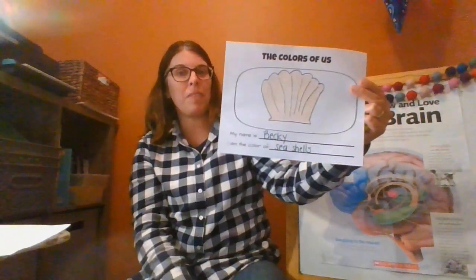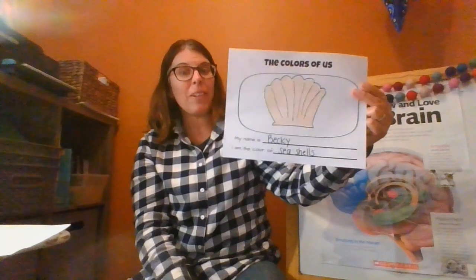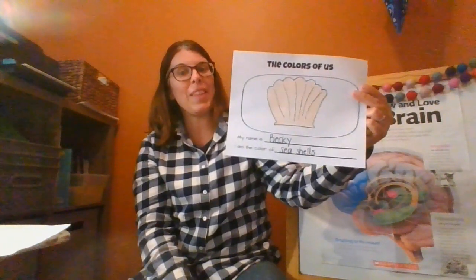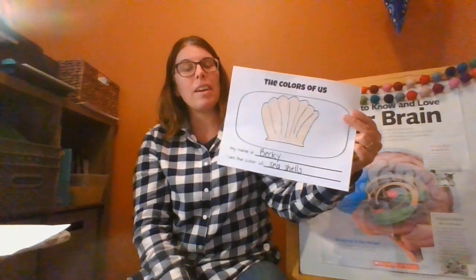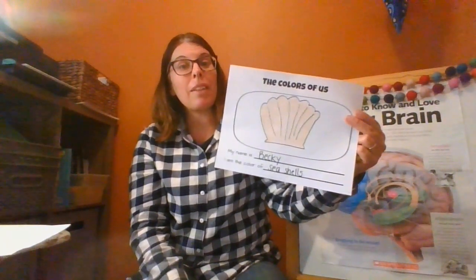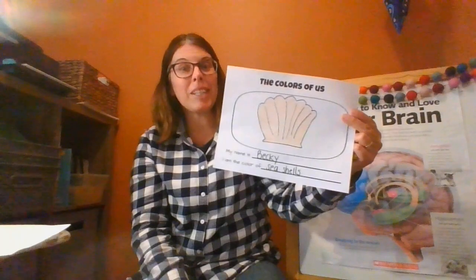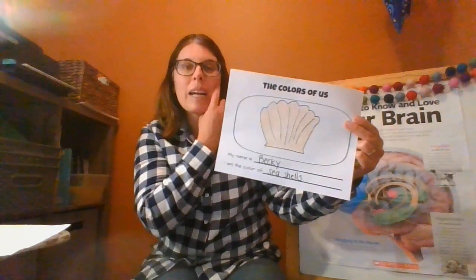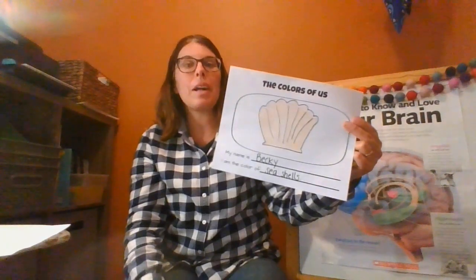Now this is where you have to do some thinking. I really had to think about what I think I'm the color of. So I was thinking and thinking, and I thought I'm the color of seashells. There's a seashell in a little box that I have on my wall. When I was walking by, I saw the seashell and I thought I'm the color of seashells.